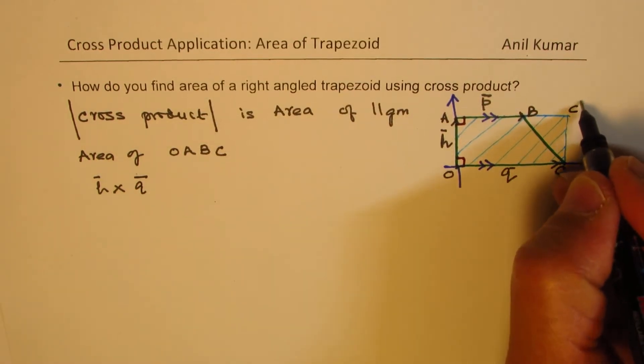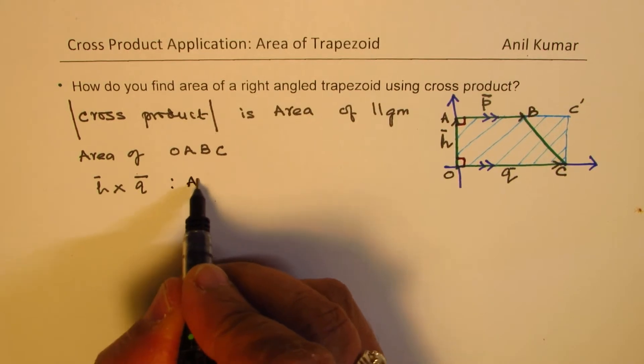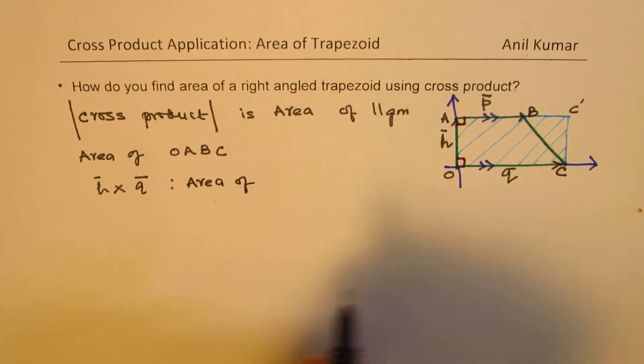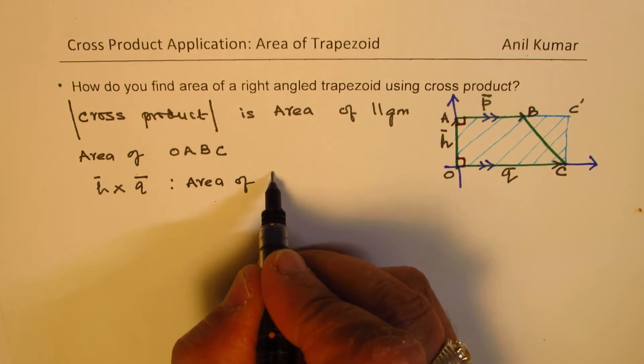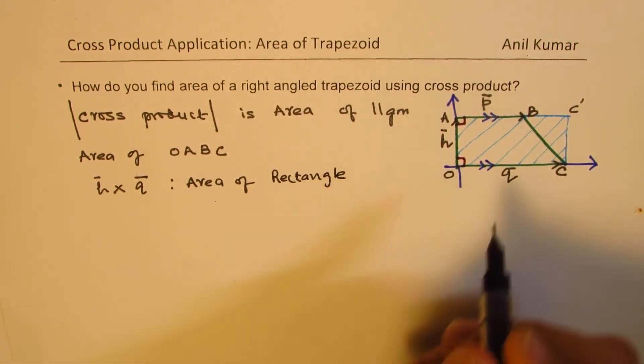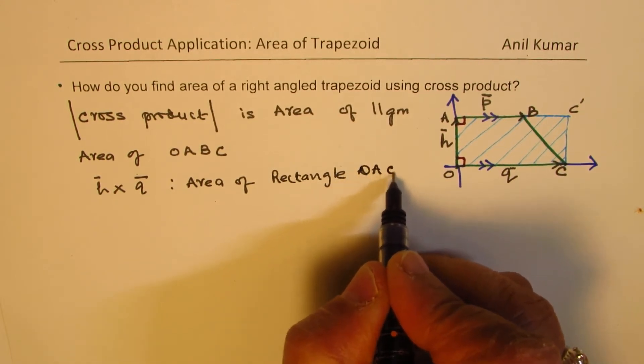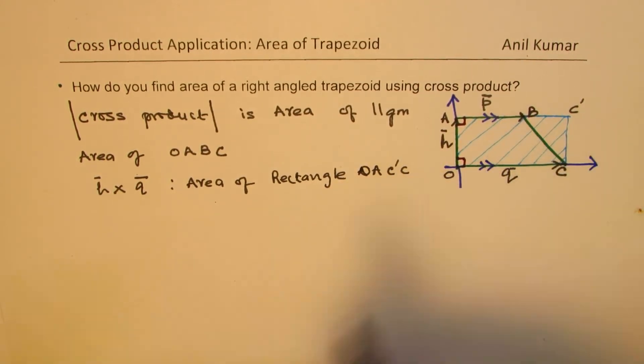Let me write this as C dash. So, we get area of rectangle O, A, C dash C, correct, as shown.